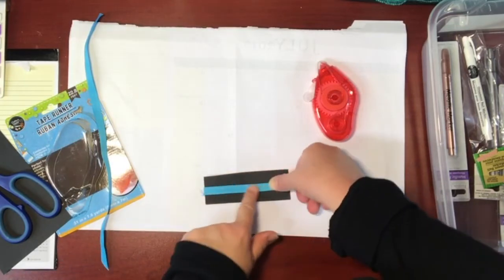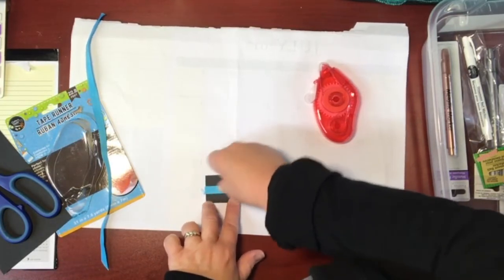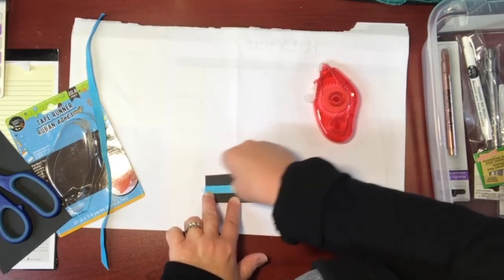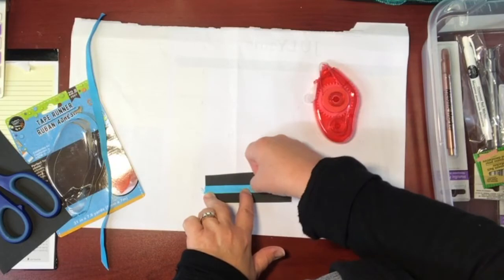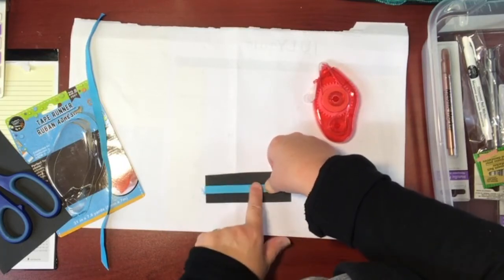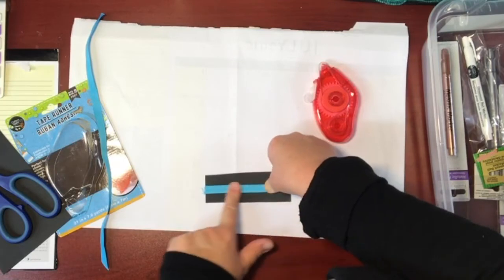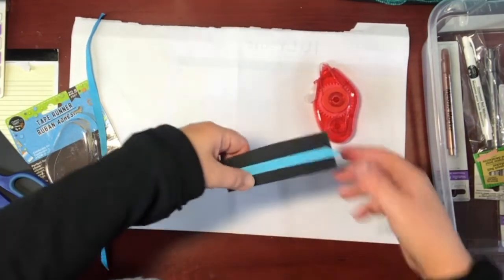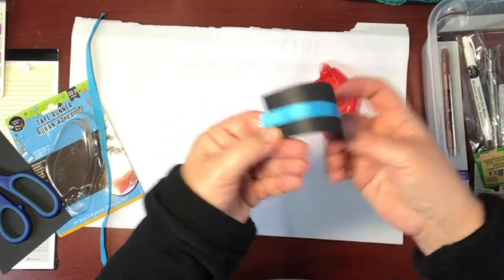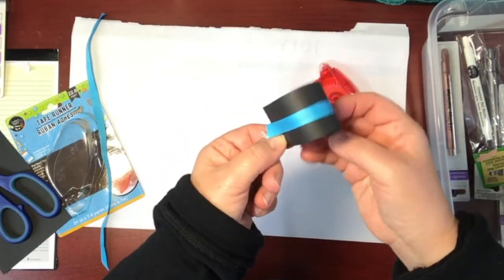And the trick with the ribbon is you really have to kind of massage the adhesive in there because the fabric is kind of porous and there are lots of little grooves in there. So if you want it to stick well you should put a lot of pressure on it. Okay so here we go. So far so good.